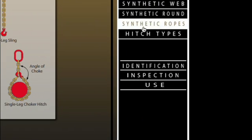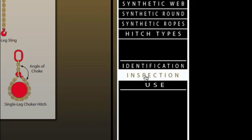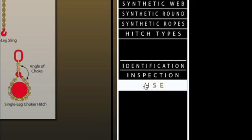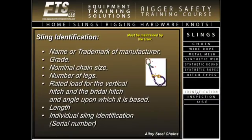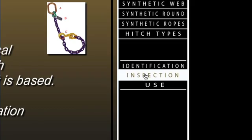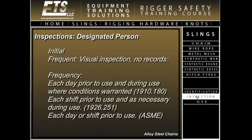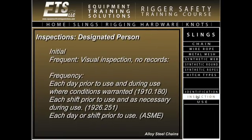You will notice another set of three buttons: the identification button, the inspection button, and the use button. By left clicking on the identification button, you will be given what information must be supplied on the manufacturer's ID tag. Once you have read and understand the information in the identification section, you may move on to the inspection section. By left clicking on the inspection button, you will be given the information needed to properly inspect and, if necessary, remove from service the corresponding sling type.